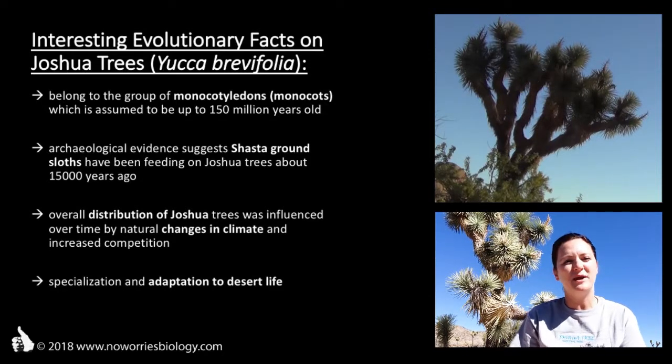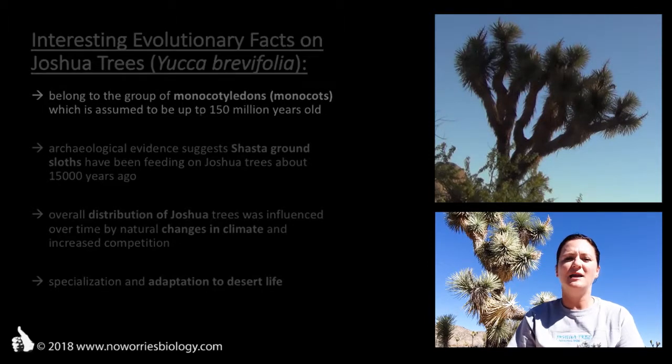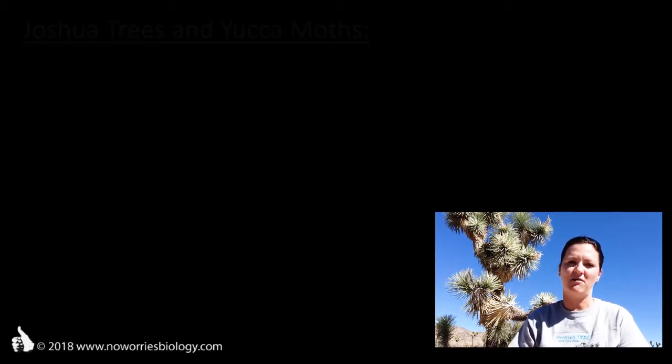For more information on these adaptations, watch the video 'Joshua Trees' Adaptations to Life in the Mojave Desert.' Back to evolution. Joshua trees live in a very close relationship with a specific insect, the yucca moth.